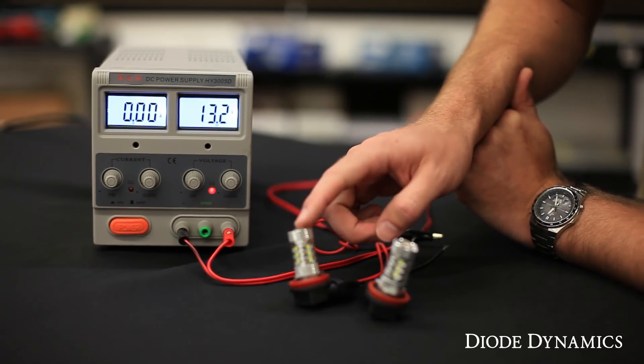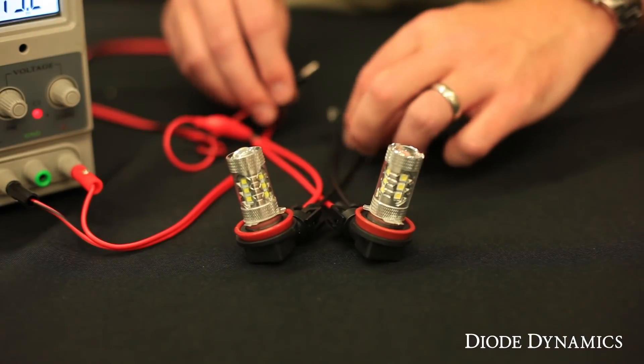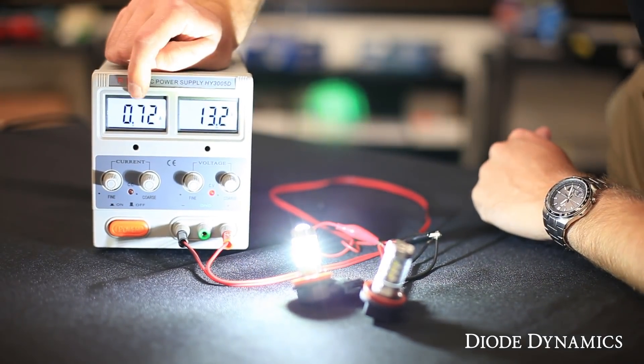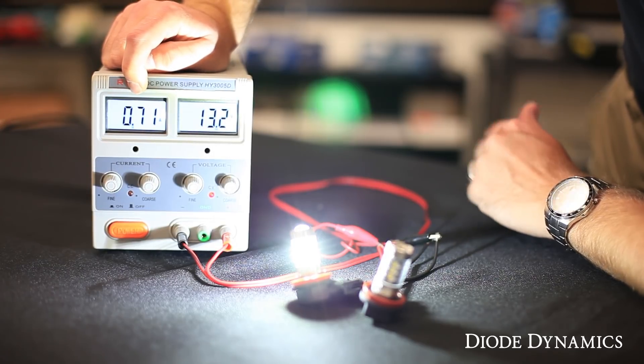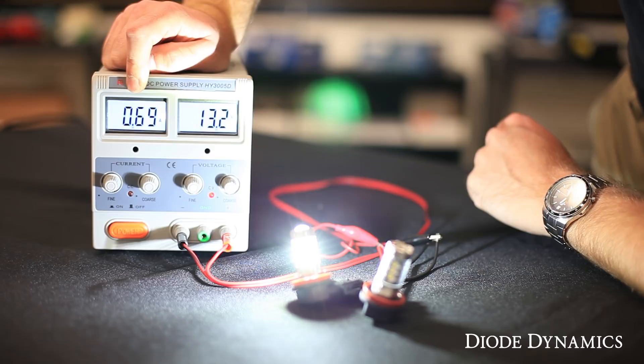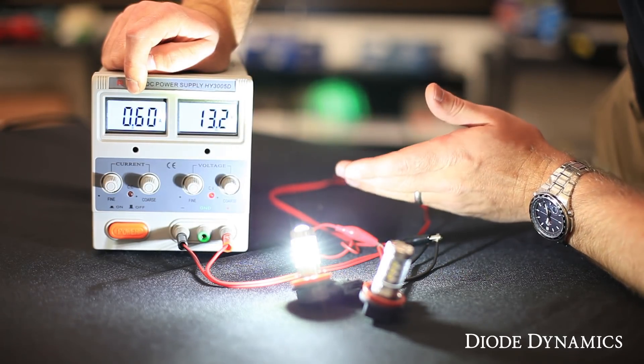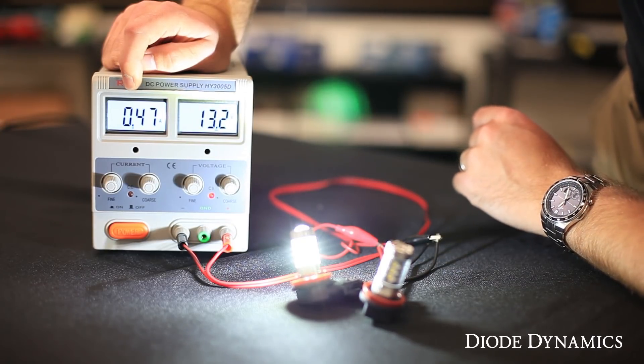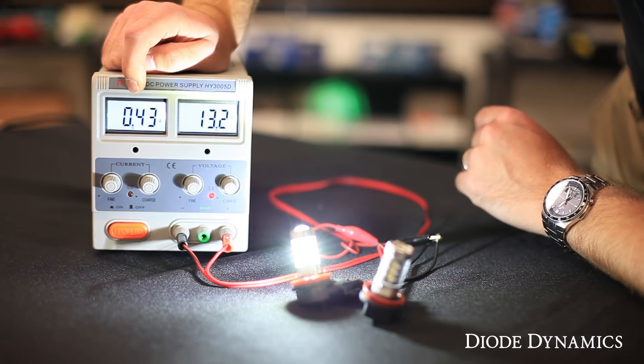So first, let's take a look at what the competitor's bulb does. We'll hook up this bulb by itself, and we can see it starts at .72 amps, .71 amps. We're already getting it to drop a little bit here. As it heats up, it'll start dropping. Most bulbs take about 10 to 15 minutes to fully warm up. But you can see, look how quickly this bulb is decreasing.